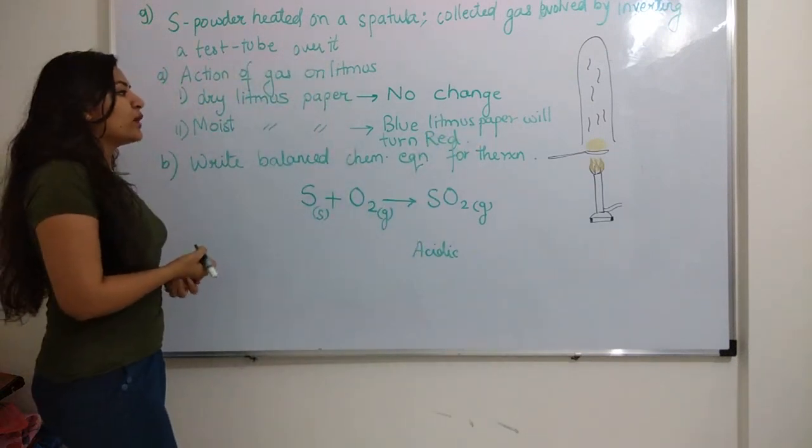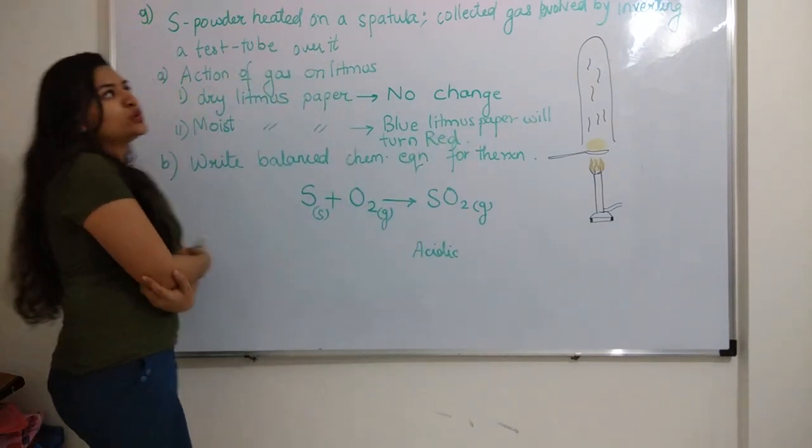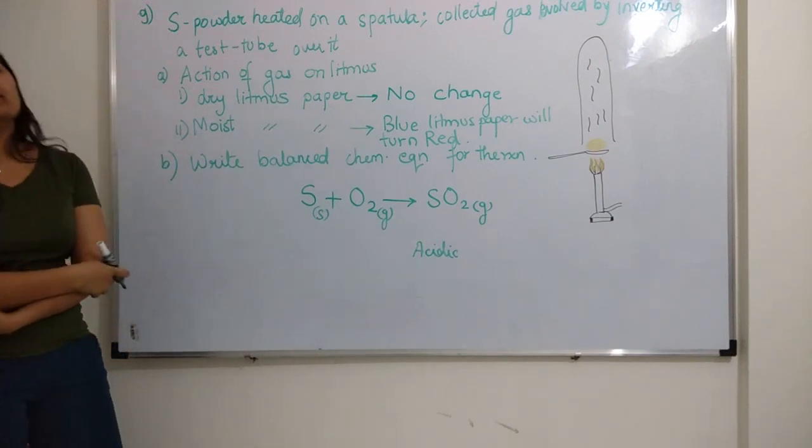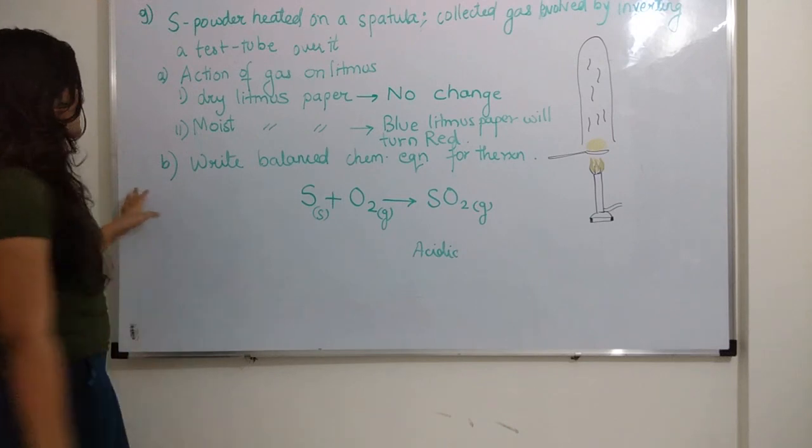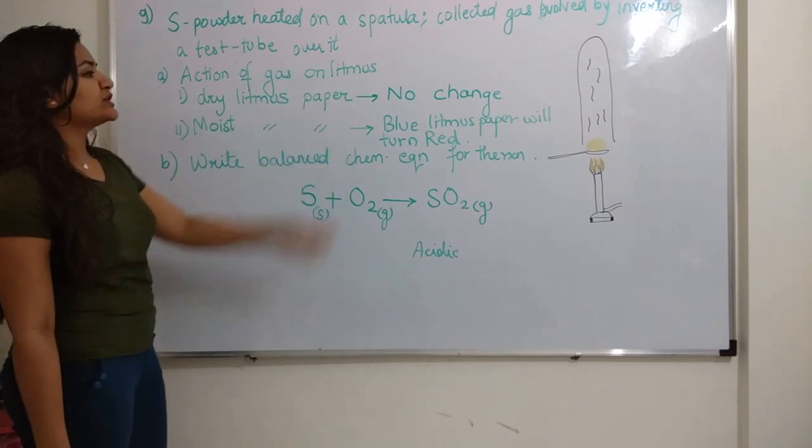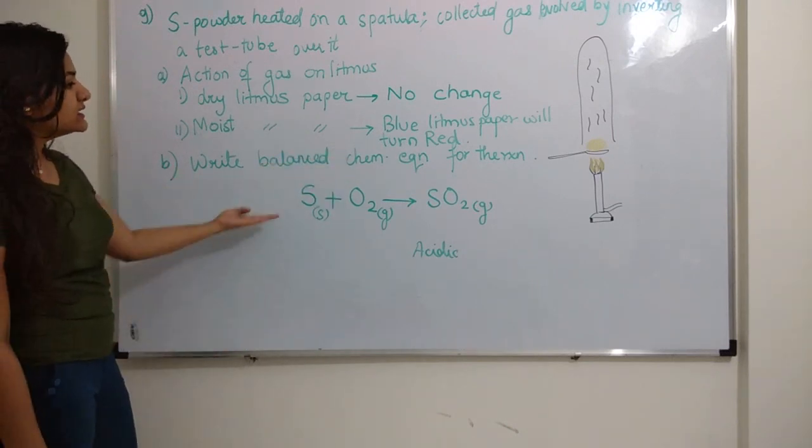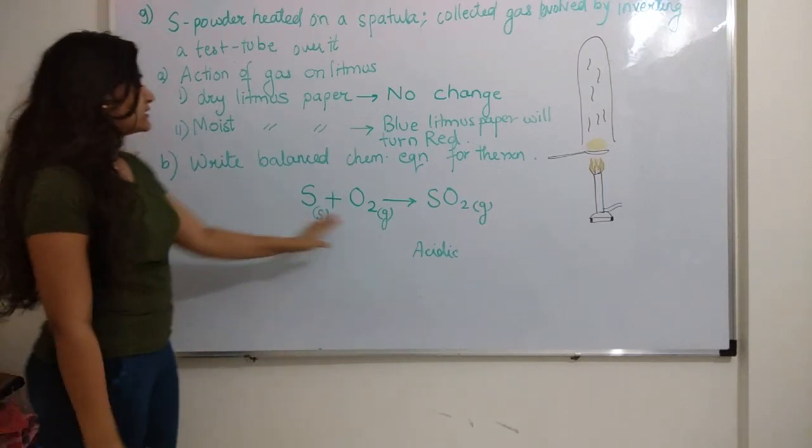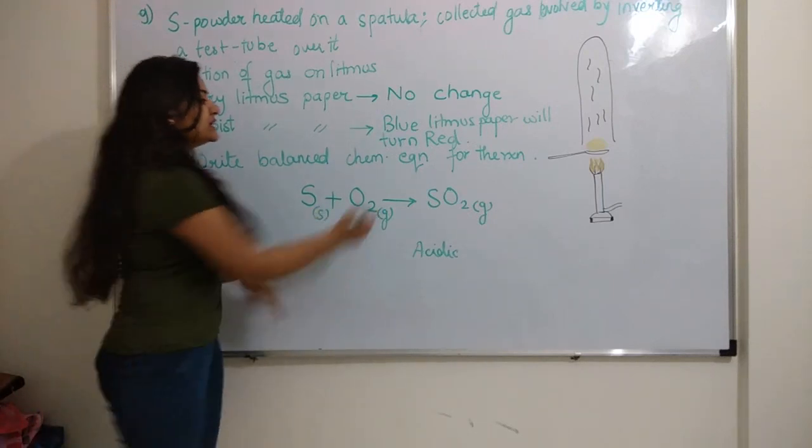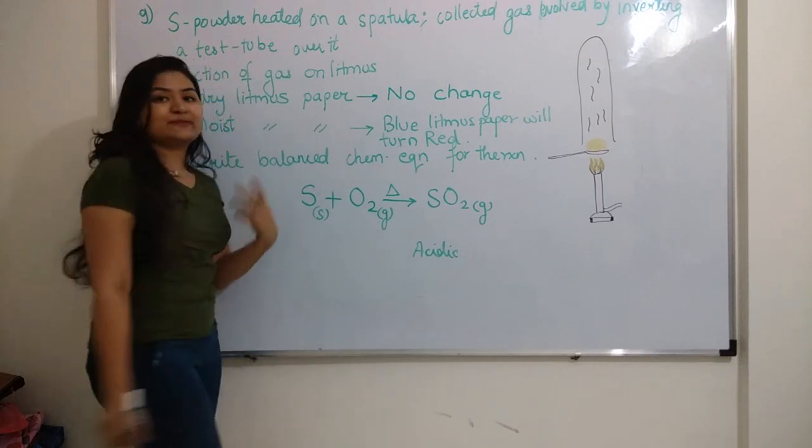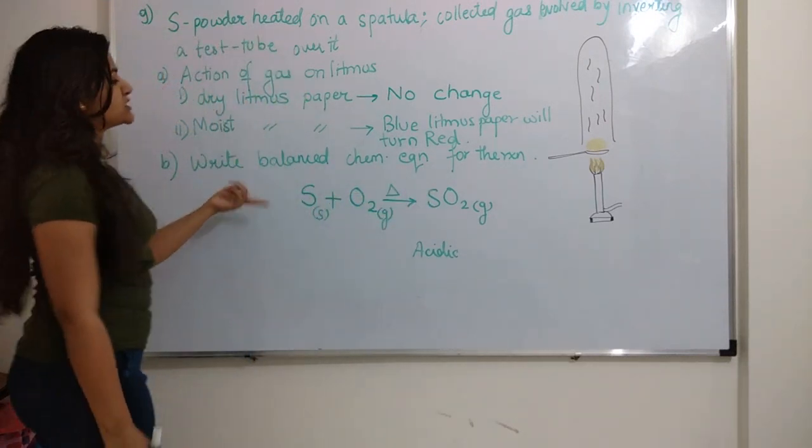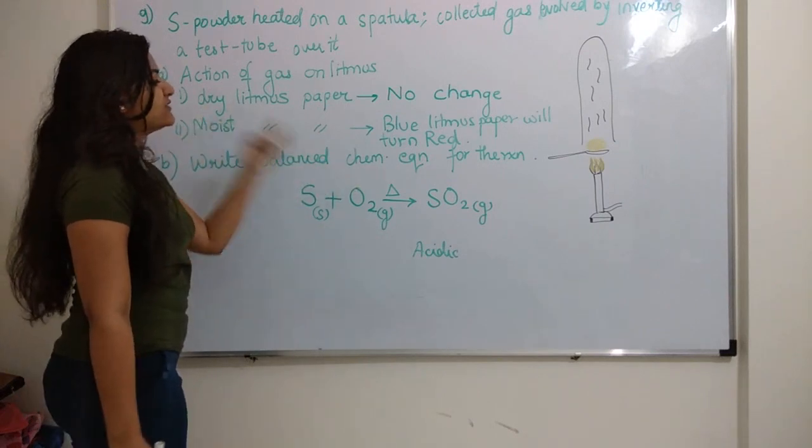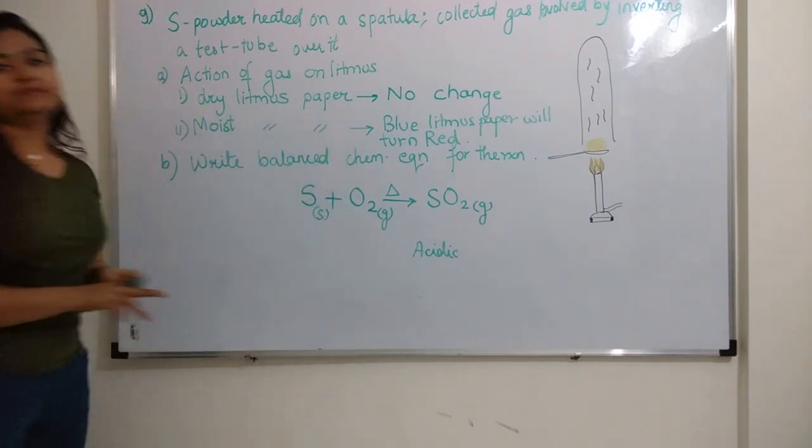Moist litmus paper: because it is moist, so there will be ionization. S plus O2 gives SO2. The sulfur dioxide produced, now it is a non-metal. Non-metallic oxides are acidic in nature. Because they are acidic in nature, blue litmus paper will turn red. Write why: because SO2, being a non-metallic oxide, is acidic in nature.